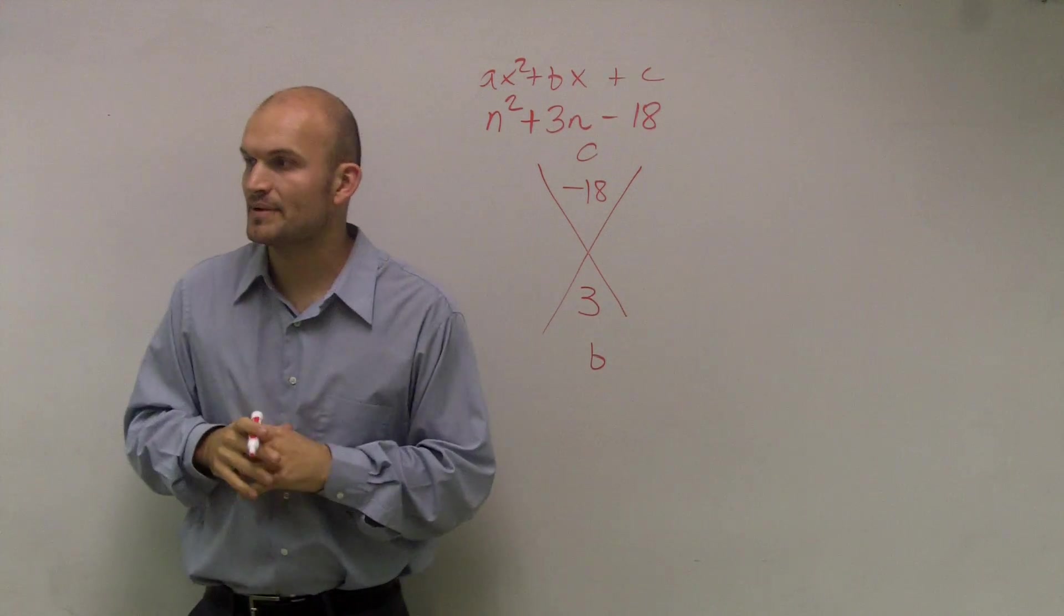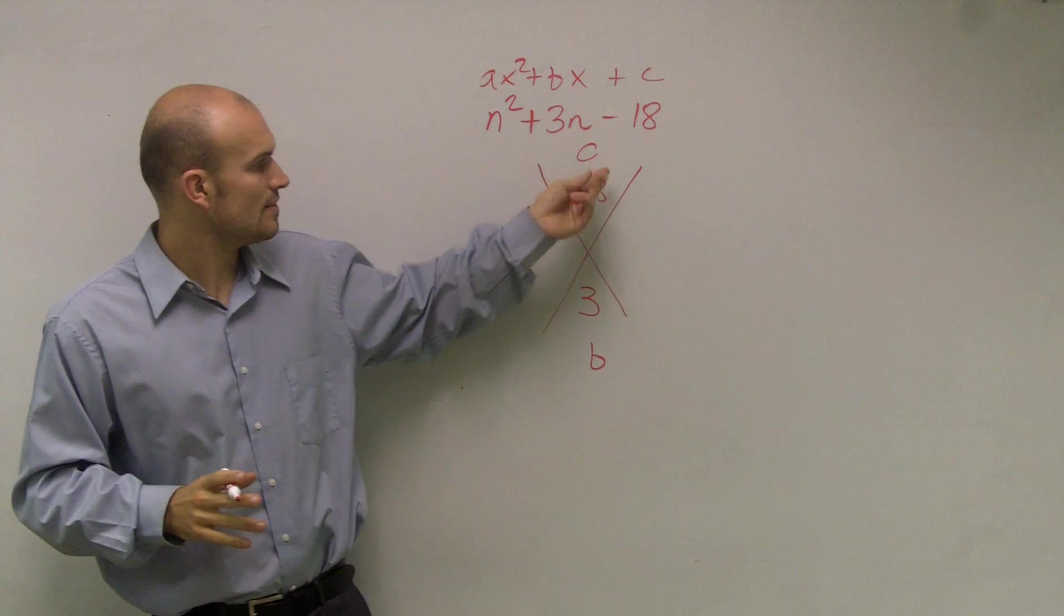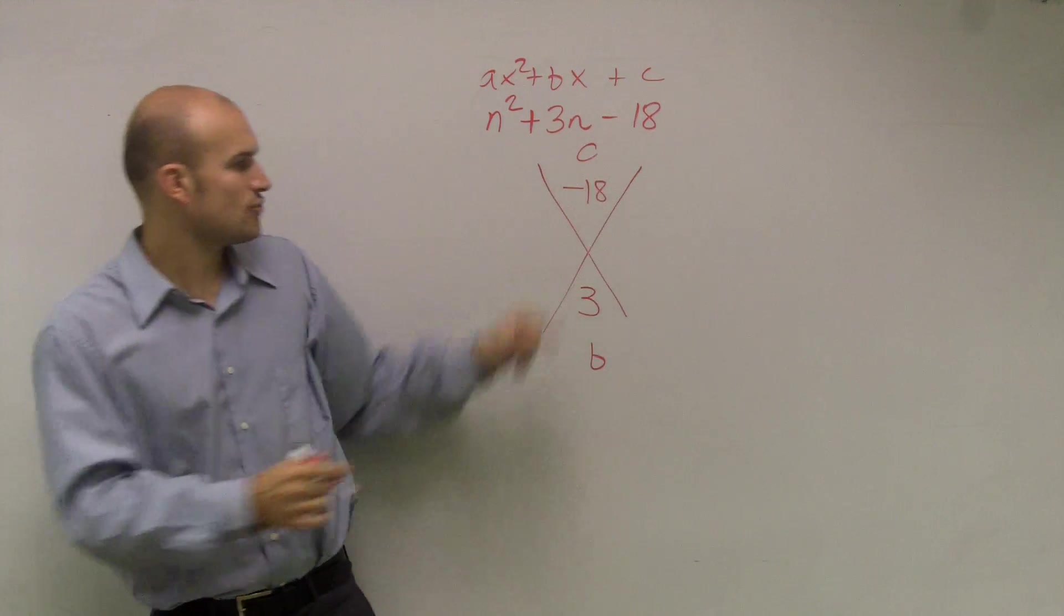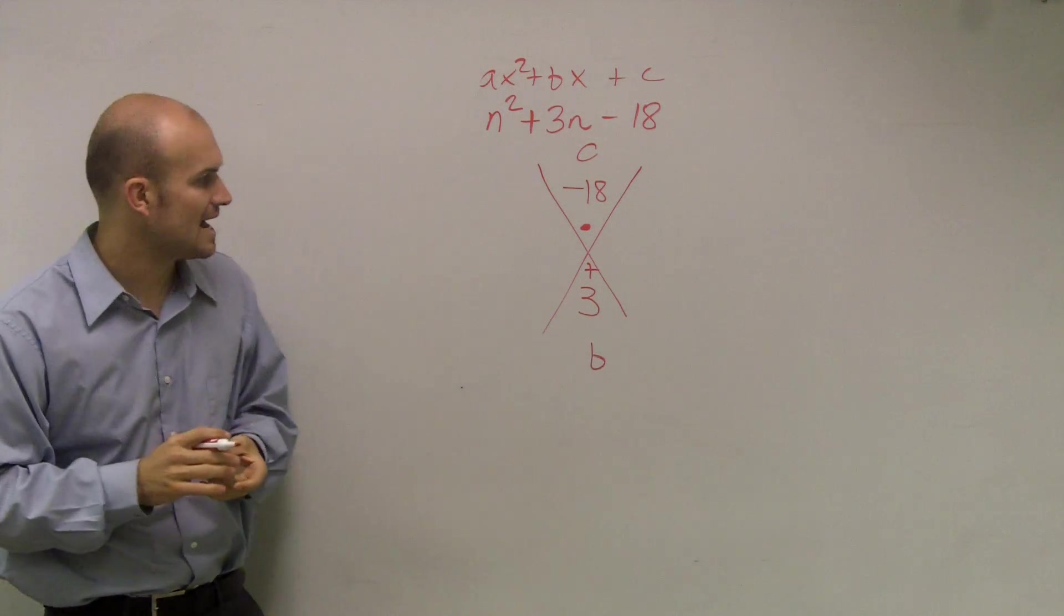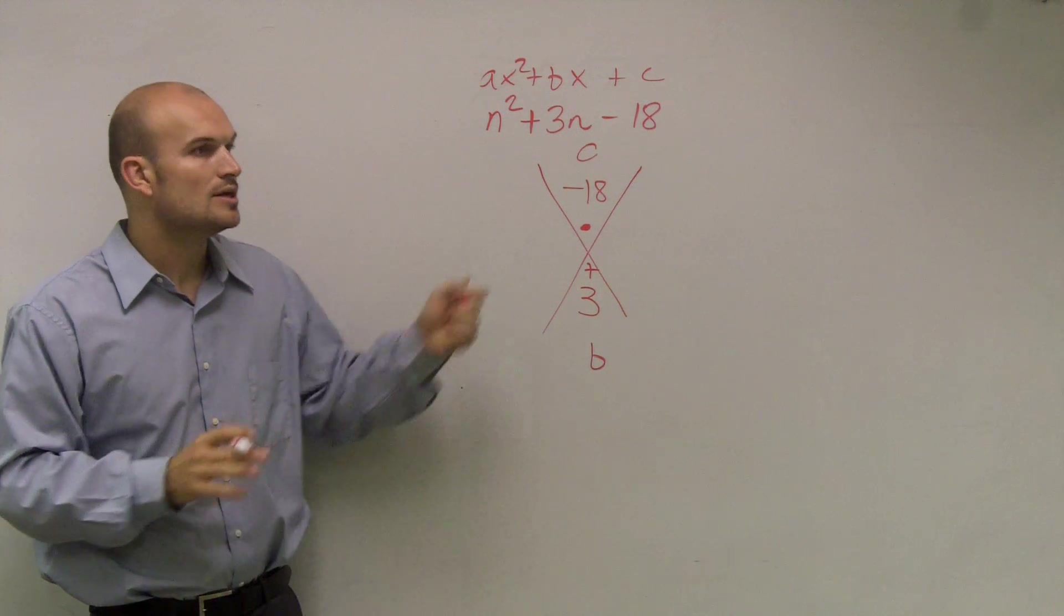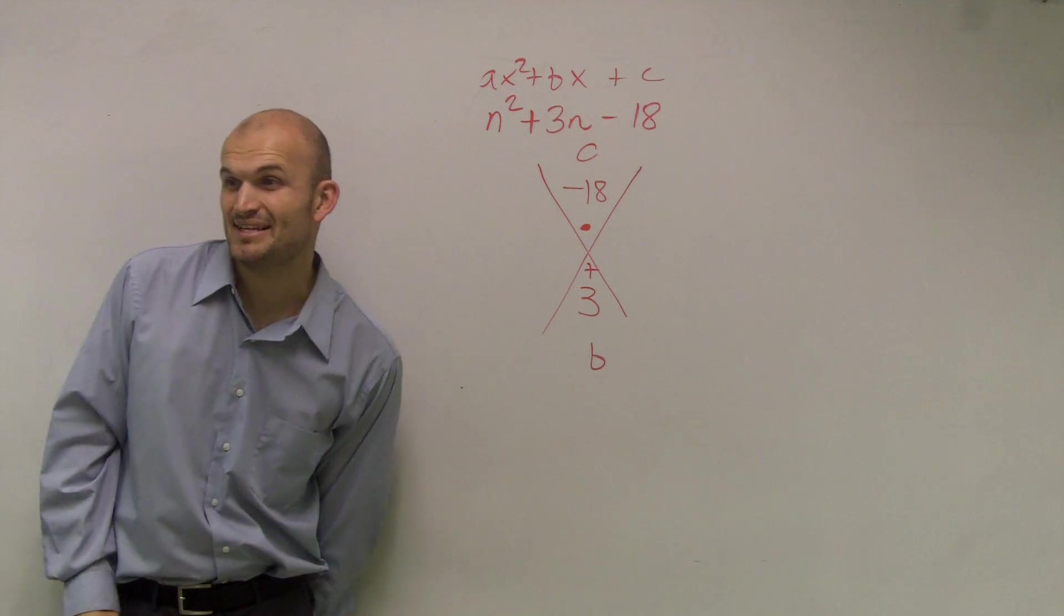So something that's happened is really important. We now notice that I have my product. I put the multiplication dot and the addition below. So therefore, Josh, what I need to do is I need to multiply two numbers to give me a negative 18.